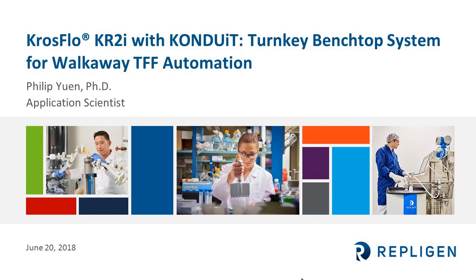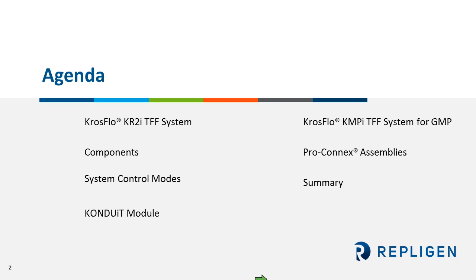Today I will discuss the key features of the Crossflow KR2i TFF system, key components enabling automated control, and the multiple modes of automated TFF operation. I would also like to introduce the new Conduit module and its features, and I will close by talking about systems for scaling up TFF operations and single-use filtration assemblies that can be utilized with our Crossflow systems.